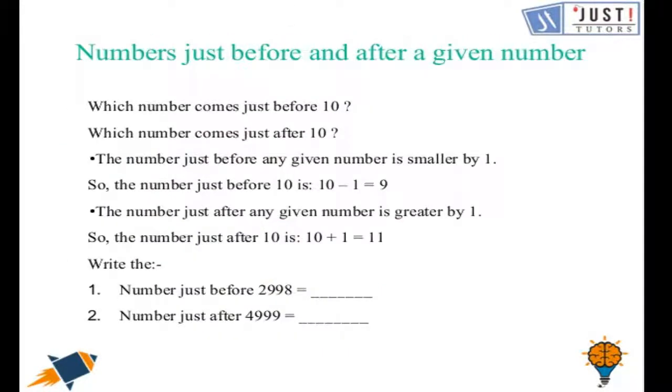Now let us move ahead in discussing numbers just before and after a given number. Which number comes just before 10? You can tell the number that is just before 10 by subtracting 1 from it. That is 9. Now which number is just after 10? You can tell that by adding 1 to it. That is 11.